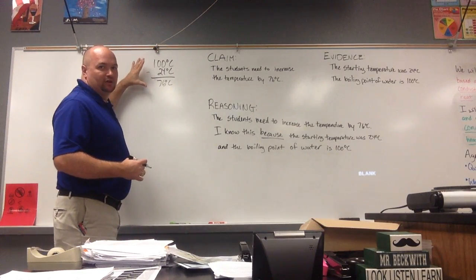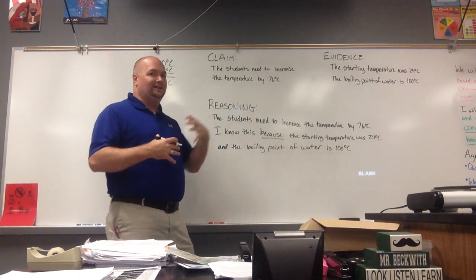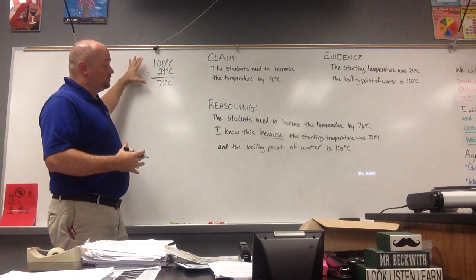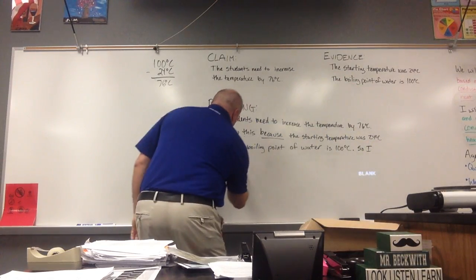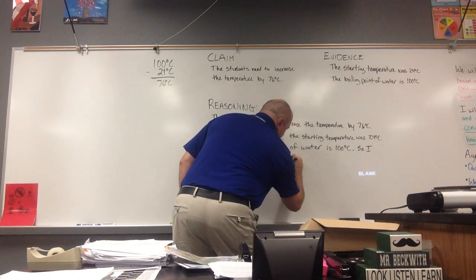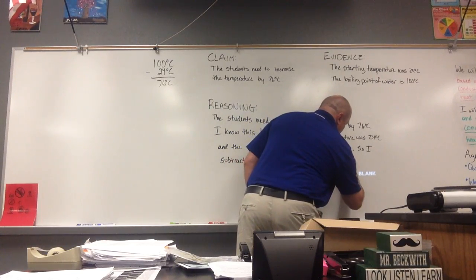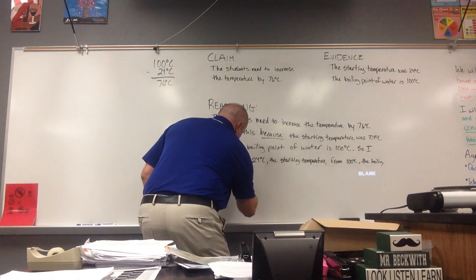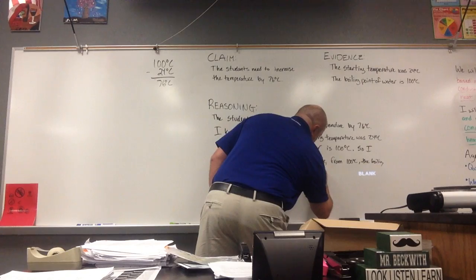Now the last thing I want to do is talk about the math in this last part of my reasoning statement. It's great that I know the starting temperature was 24 and the boiling point is 100, but that doesn't quite get me to the answer of 76 degrees Celsius. I'm explaining in detail how I got my answer. So I'm going to add: 'So I subtracted 24 degrees Celsius, the starting temperature, from 100 degrees Celsius, the boiling point of water, to get 76 degrees Celsius.'